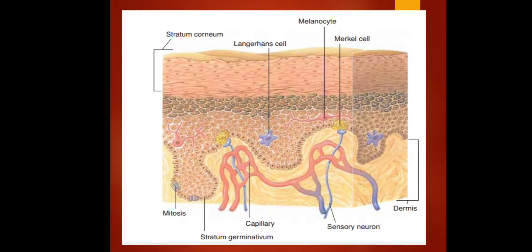This illustration shows the location of the different parts of the integumentary system. We can see the stratum corneum, Langerhans cells, melanocytes, Merkel cells, dermis, sensory neurons, capillaries, stratum germinativum, and where mitosis takes place.